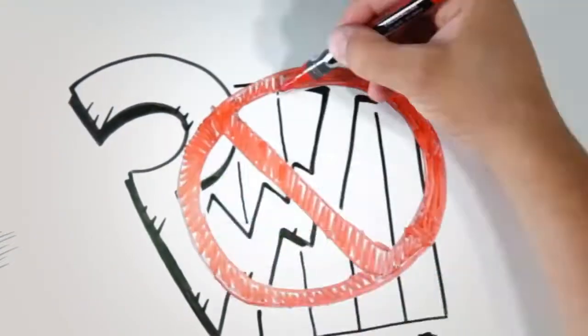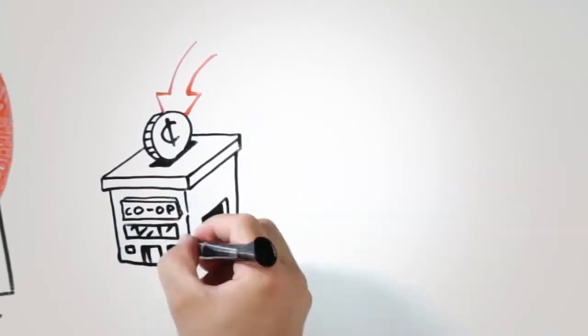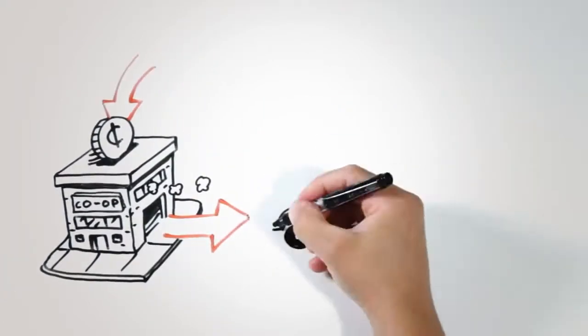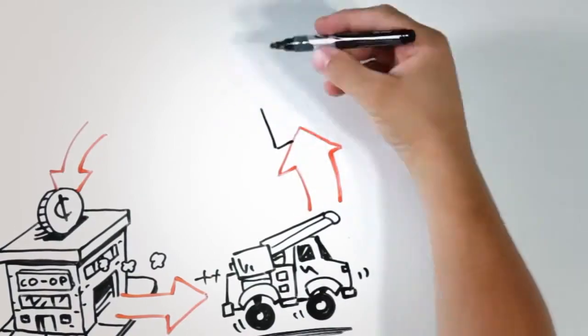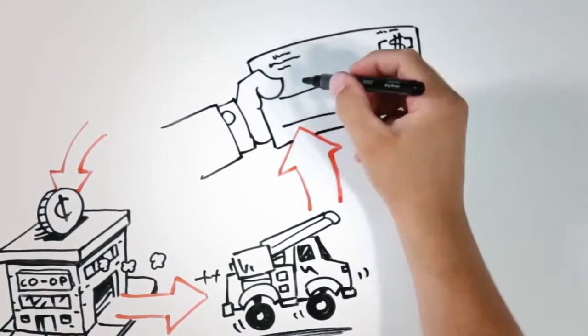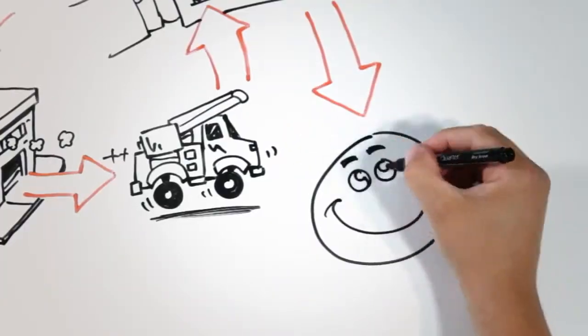First off, cooperatives are not-for-profit. Money comes in from members when they pay their electric bills. Money goes out to pay co-op expenses. A little bit is set aside for emergencies and the future. Any leftover is returned to members. Pretty sweet, huh?